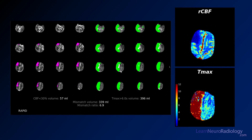Here are my results from CT perfusion — I have the rapid processing here. You can see that it's identified an area where the cerebral blood flow is less than 30%, an area of about 57 milliliters.